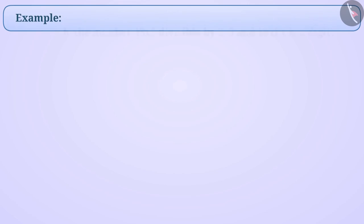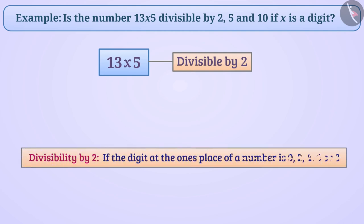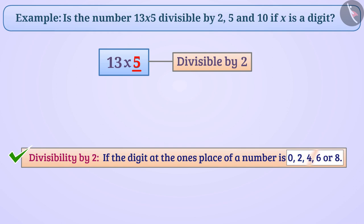Next example: is the number 13x5 divisible by 2, 5, and 10 if x is a digit? The divisibility rule for 2 tells us that if the digit at 1's place of a number is 0, 2, 4, 6, or 8, then the number is divisible by 2. As we can see, the number has 5 at its 1's place, which is not a digit from 0, 2, 4, 6, or 8. So this number is not divisible by 2.